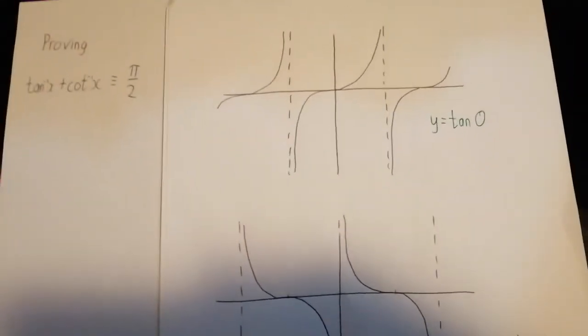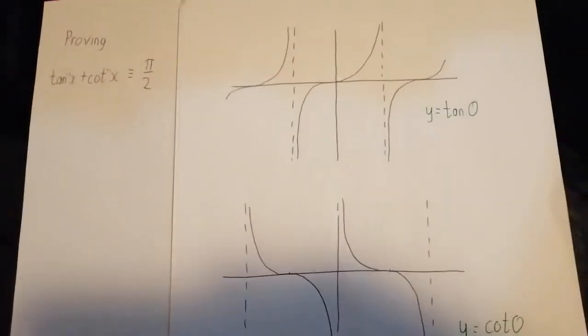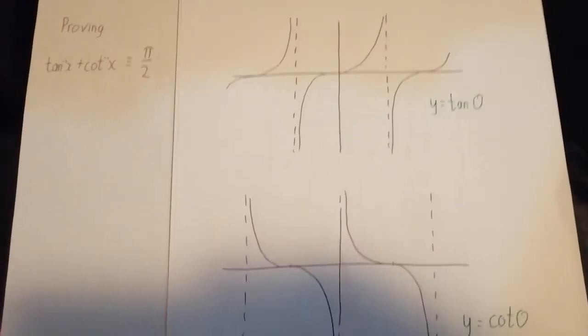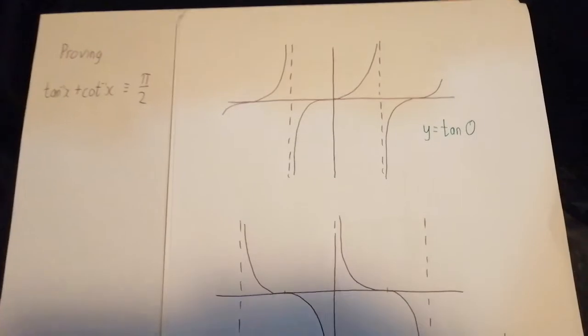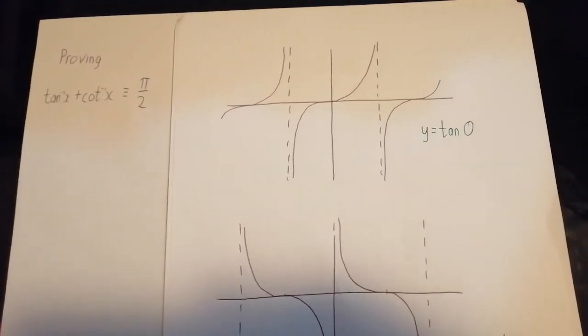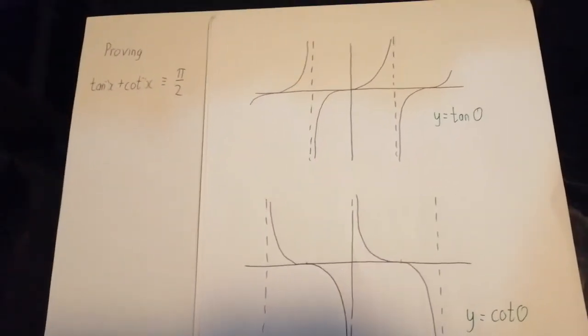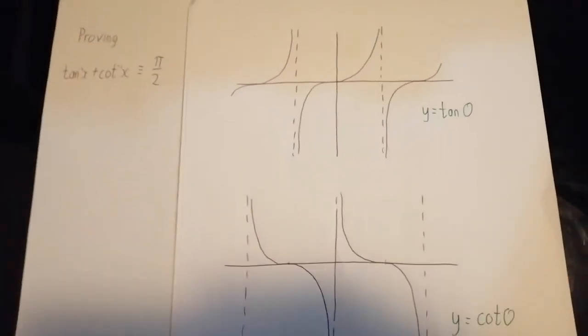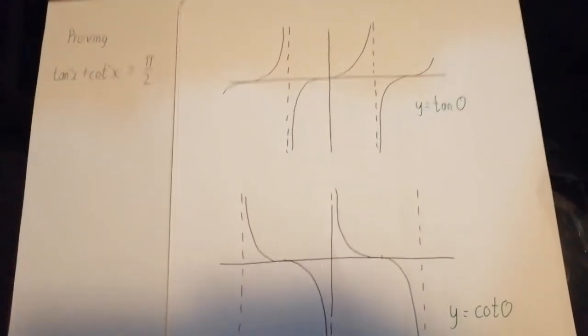OK, when you also consider where the asymptotes are, you can also see that the graph has been translated, left or right, 90 degrees, π/2 radians. Doesn't really matter about left or right when you have a period of π radians or 180 degrees.